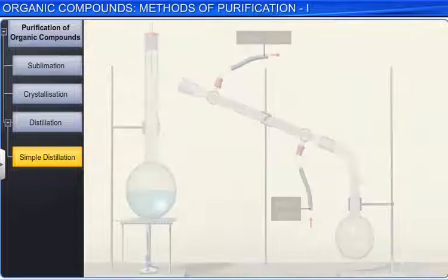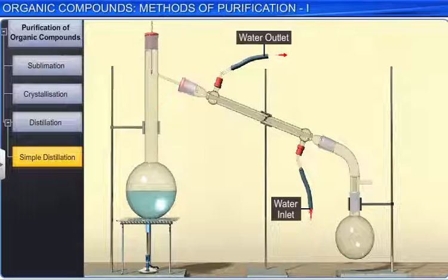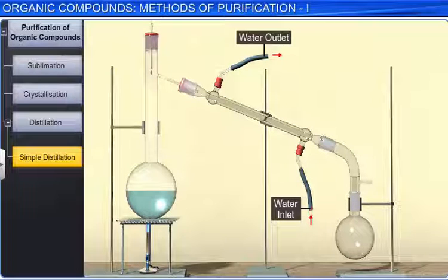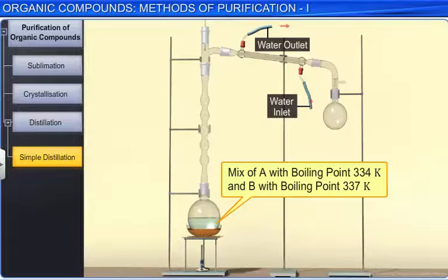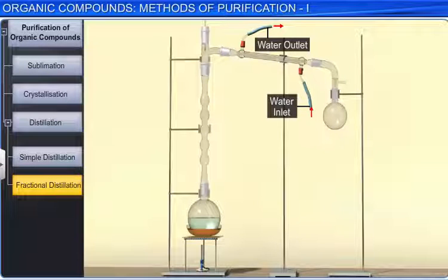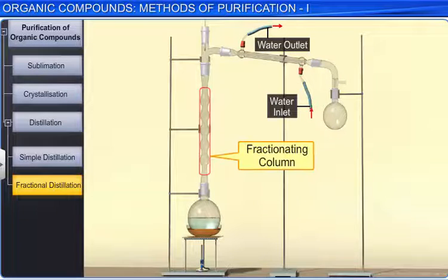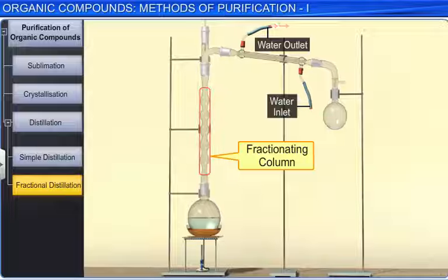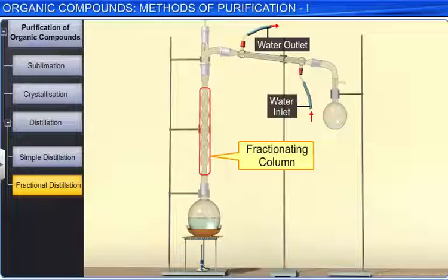Simple distillation cannot be used in the separation of liquids which do not differ much in their boiling points. Another technique called fractional distillation is used to separate liquids which have a small difference in their boiling points. In this technique, a fractionating column is fitted over the mouth of the round bottom flask. The purpose of the fractionating column is to increase the area of the cooling surface and to provide hurdles to the ascending vapors.